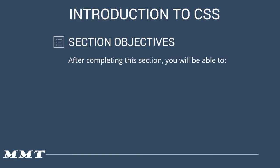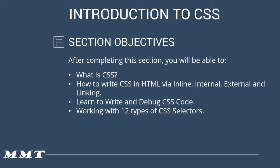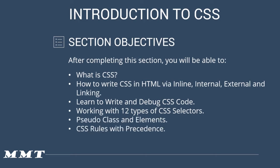Welcome to the introduction to CSS section. Let's understand what you'll learn after completing this section. You'll learn what CSS is, its full form, where it's used, and its purpose. Then you'll learn how to write CSS in HTML via inline, internal, external, and linking methods. You'll also learn how to write and debug CSS code, and 12 different types of CSS selectors and how to write them in different formats. Then you'll learn about pseudo classes and elements, and how CSS rules are applied with precedence — which rule has more precedence over the other. Finally, you'll learn how to add colors and text formatting with CSS to your HTML elements.